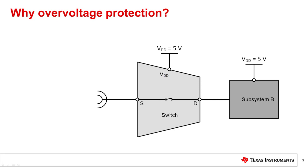Overvoltage events may occur from sources such as EMI and surge events, miswiring, and short circuits. In this example, an operator inserts a 20-volt sensor line into a 5-volt system.